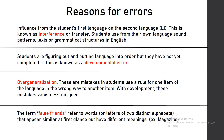The next reason is false friends. False friends refer to words that appear similar at first glance but have different meanings. For example, 'magazine' — in Russian this means a place where we go shopping, but in English 'magazine' means a journal that we read.